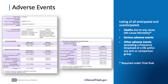The Adverse Events module lists all collected events, whether anticipated or unanticipated, that result in death, are serious, or are non-serious and occurring above a frequency threshold of less than or equal to 5% in any study arm or comparison group. Examples of all three Adverse Events tables are shown to the left.